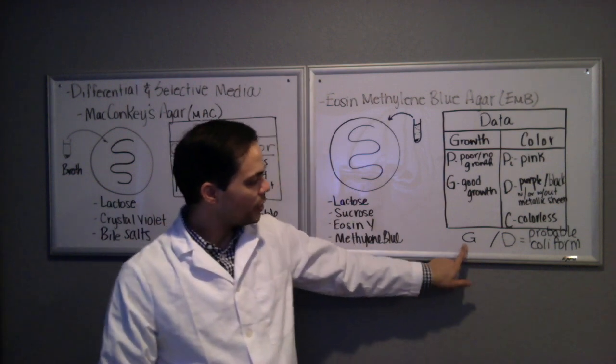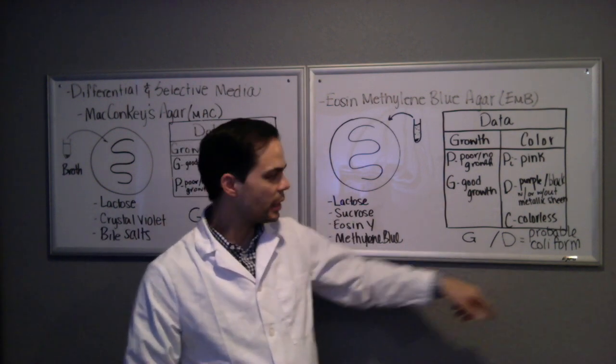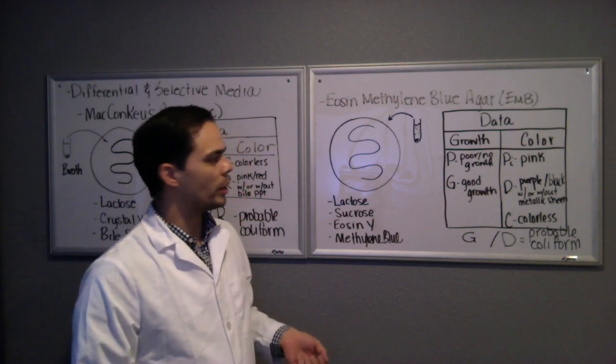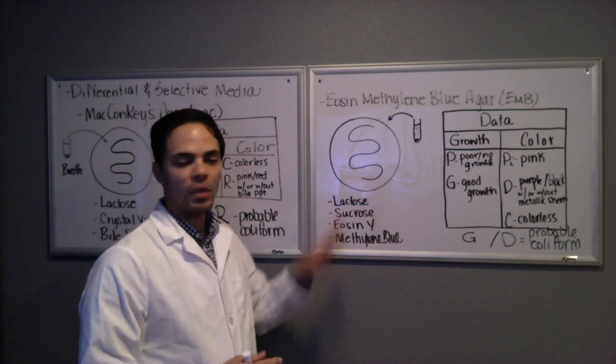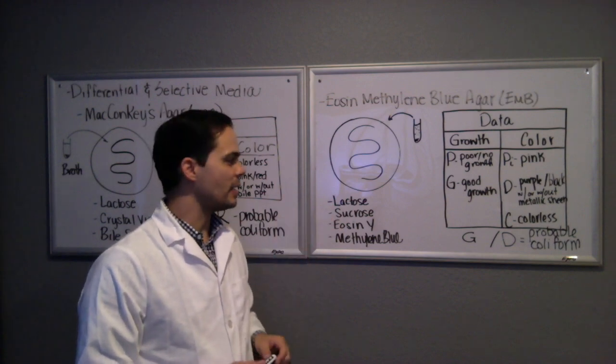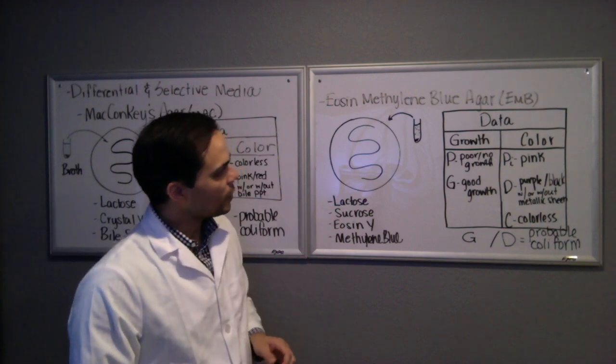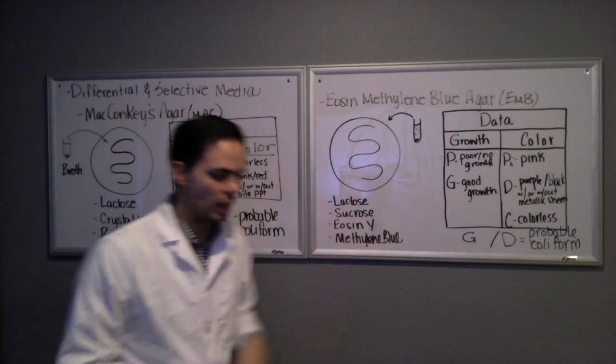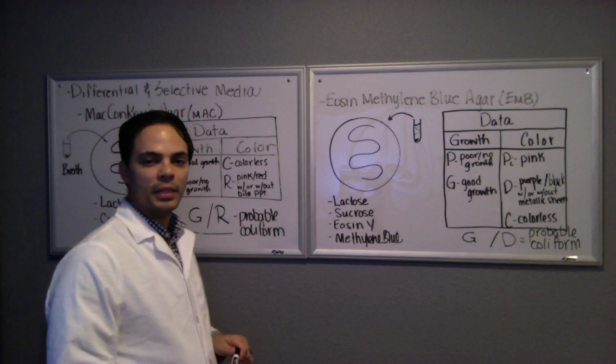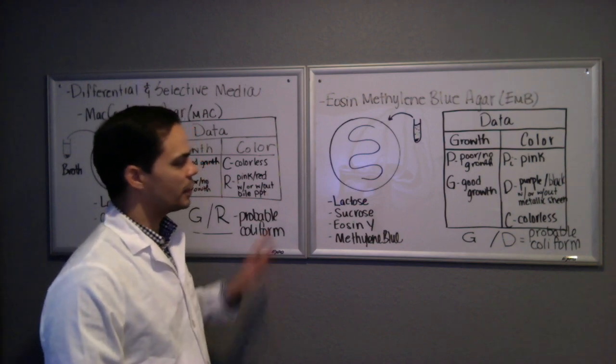E. coli would actually give you G and D because it is one of the coliforms that is going to strongly ferment lactose and grow really well on these media because it's gram negative. Again, Staphylococcus aureus because it's a gram positive, wouldn't even grow on this media, so those would be two really good positive and negative controls for these experiments.